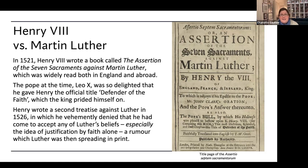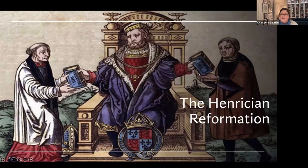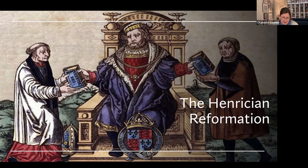This is the sort of lost small-c catholic, small-r reformation — there were beautiful things that could have happened if the contingencies of history had turned out another way. But they did not, and what we got instead was the Henrician Reformation. Here's Henry giving the word of God to Archbishop Cranmer and to Wolsey's replacement as Chancellor, Thomas Cromwell. Let's talk about what Henry actually did.